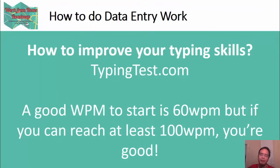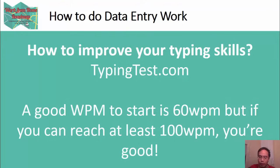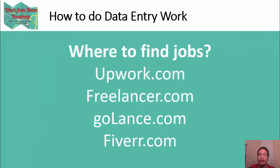You can go to a website like typingtest.com and practice there. As you practice, you should increase your words per minute, or WPM. A good starting point is 60 words per minute — if you can type at 60 WPM, you're above average and should be good to do data entry work. If you can reach 100 words per minute, that's even better. I usually type around 100 WPM, so if you can reach that speed, you can do a lot of work and get paid much higher.